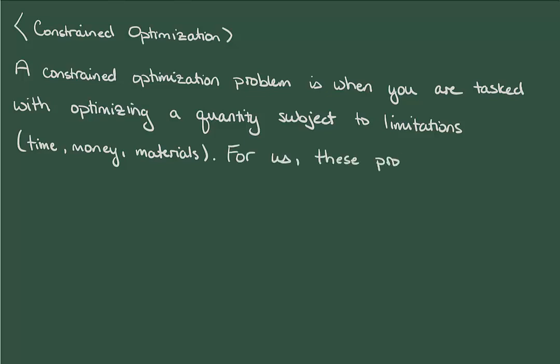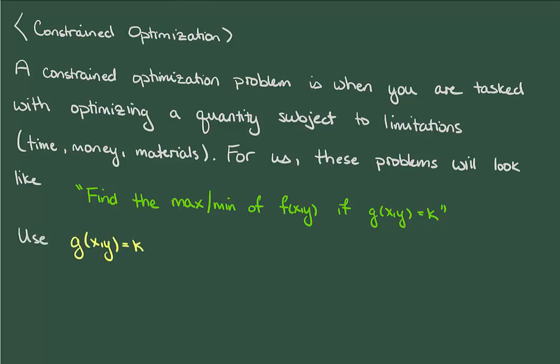At this point our problems will almost always be of the form find the max or min of the function f subject to the constraint g(x,y) equals k. But now you might be thinking these are functions with two variables and we don't know how to deal with such things. Well our technique will be to use the constraint g(x,y) equals k to rewrite f so that it depends only on a single variable. This new function will have the constraint baked into it and at that point we can find its max or min using the usual procedure.